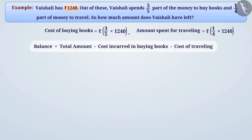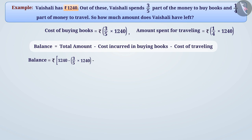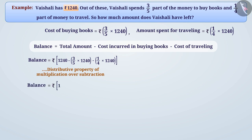Hence, the balance is equal to total amount minus the cost incurred in buying books minus the cost of travelling. Balance is equal to one thousand two hundred forty minus three by five multiplied by one thousand two hundred forty. From the distributive property of multiplication over subtraction, balance is equal to one thousand two hundred forty into bracket one minus three by five minus one by four rupees.